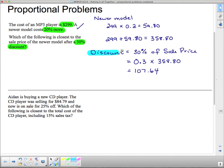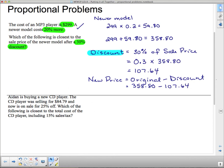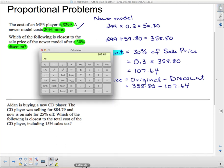Now remember that that is not the new price. That is, in fact, the discount. So this is the amount I save. So to figure out the new price, we have to take the original and subtract the discount. And so that's going to give me, the original price was $358.80, and we're going to subtract the discount, which is 107.64. And we say, 358.80 subtract 107.64 is 251.16.